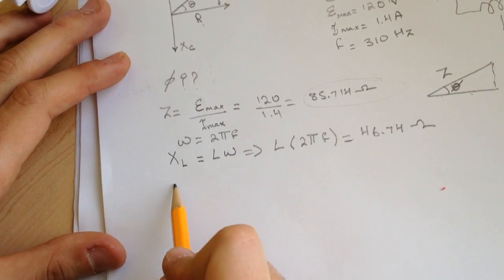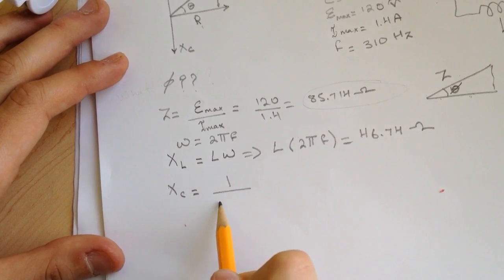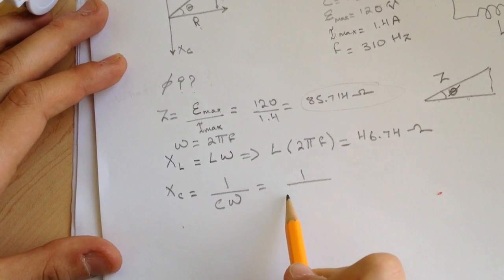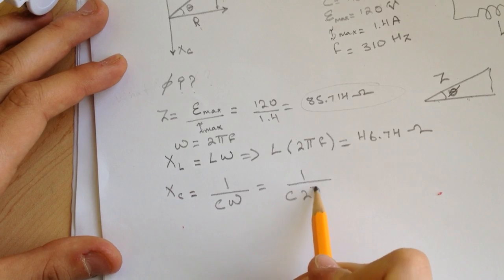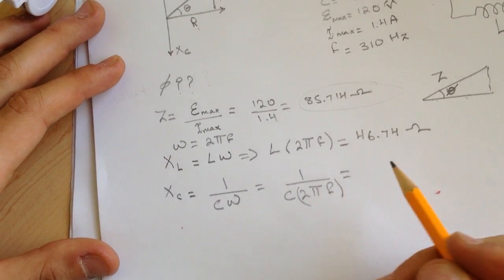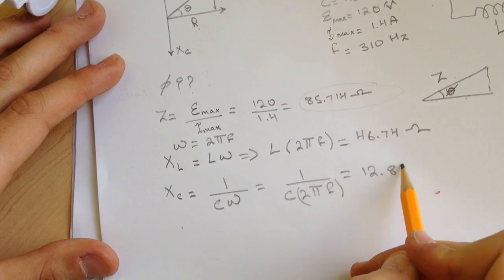And for the XC, it's 1 over C omega. It's the same. I'm going to change it to the frequency, C 2 pi frequency. And for this I got 12.83 ohms.